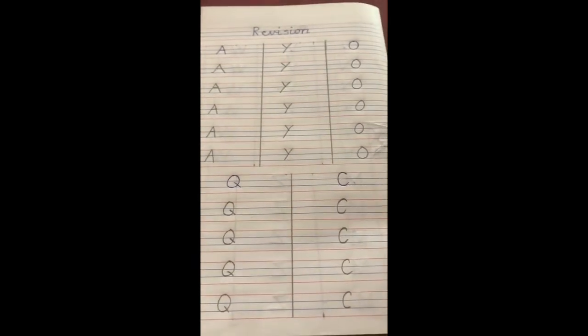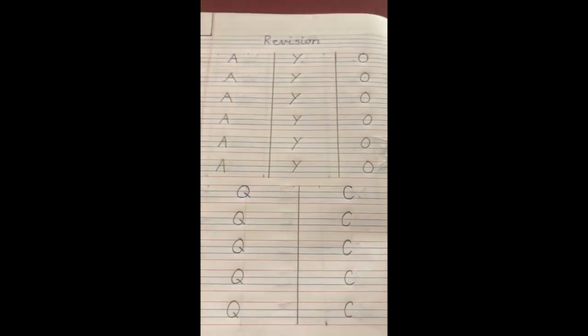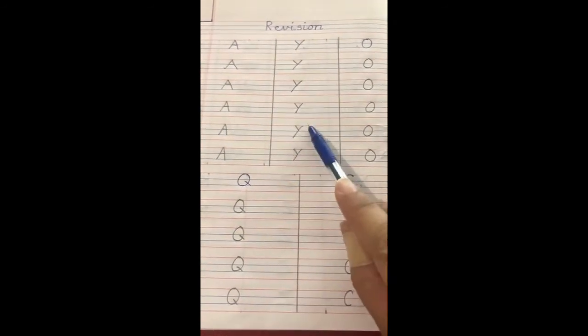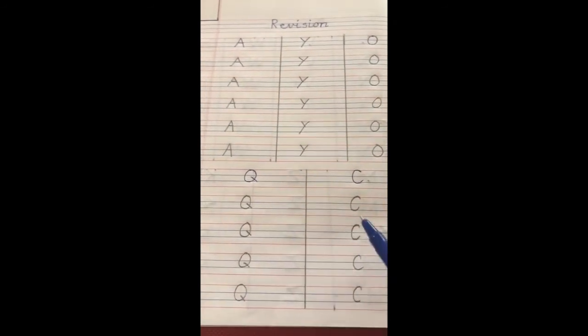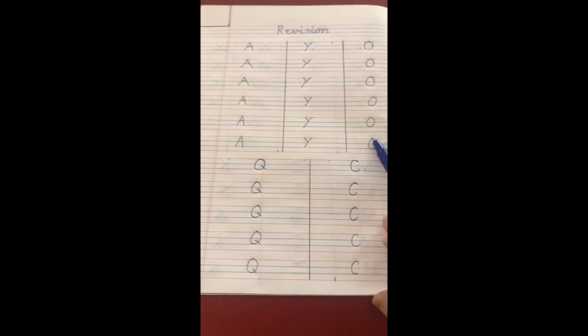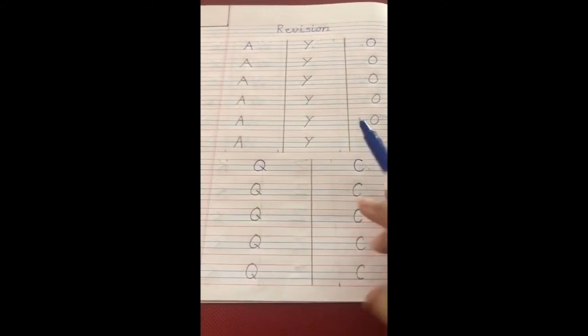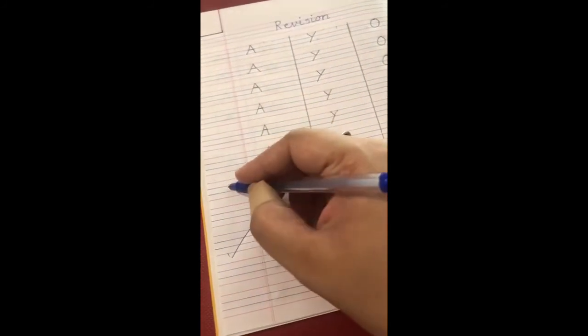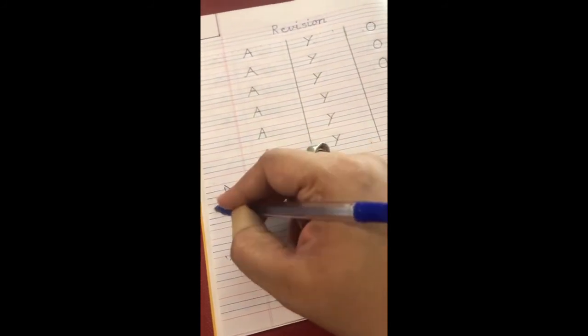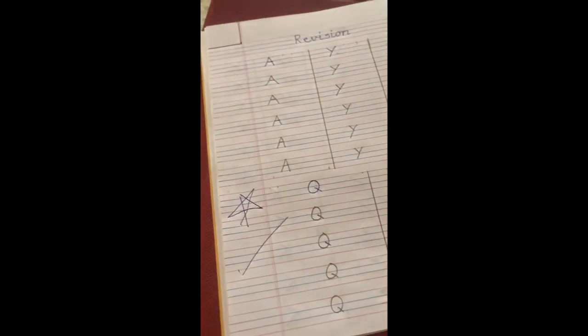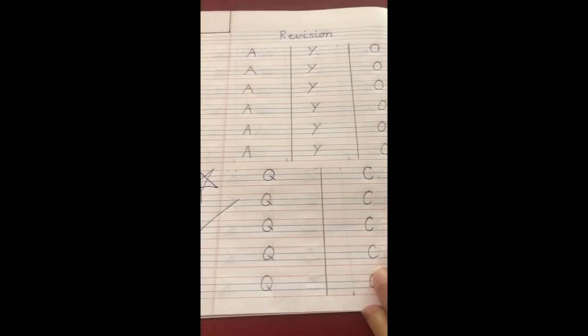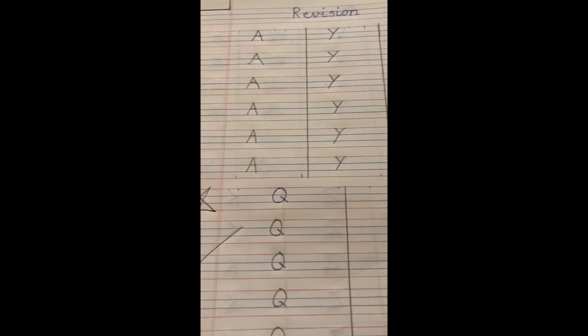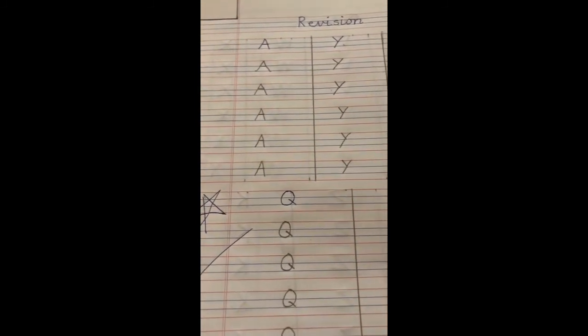So, children, after you complete your work neatly, this is how your page is going to look. See, A, Y, O, Q and C. And, if you have done your work as neat as this, then you know what you should get, right? Mama should give you a big star. And, but this is only for those children who are going to complete their work neatly and without using the eraser.